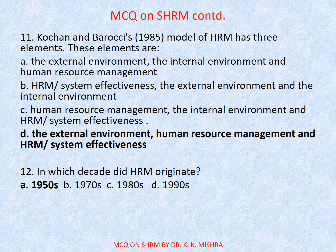Question number 11. Kochan and Baroksi's 1985 model of HRM has three elements. Options A. The external environment, the internal environment and human resource management. C. Human resource management, the internal environment and HRM system effectiveness. D. The external environment, human resource management and HRM system effectiveness. Correct option is D. The external environment, human resource management and HRM system effectiveness.